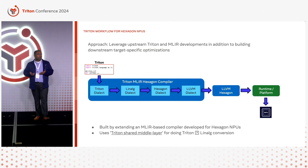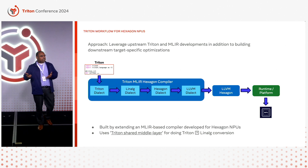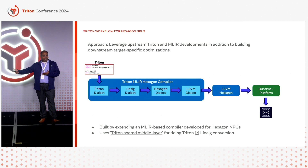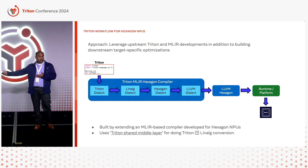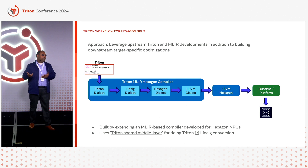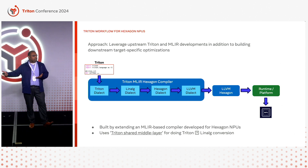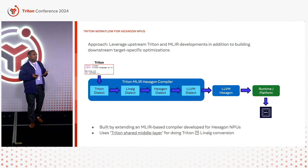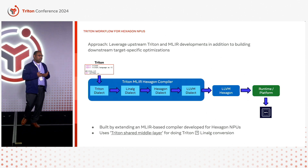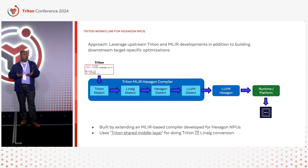Coming to the Triton workflow, we have been developing an MLIR-based compiler toolchain that can take inputs in the MLIR-Linalg IR form and lower them to LLVM IR all the way to Hexagon assembly code that can run on our Hexagon NPUs. We extended this MLIR-based workflow by plugging in the Triton-Linalg converter provided by the Triton shared middle layer built by Microsoft and being adopted by the community. That way, we have the end-to-end Triton to LLVM IR to Hexagon pipeline. The overall approach is to leverage upstream Triton and MLIR developments and build downstream target-specific optimizations to enhance the workflow on our targets.